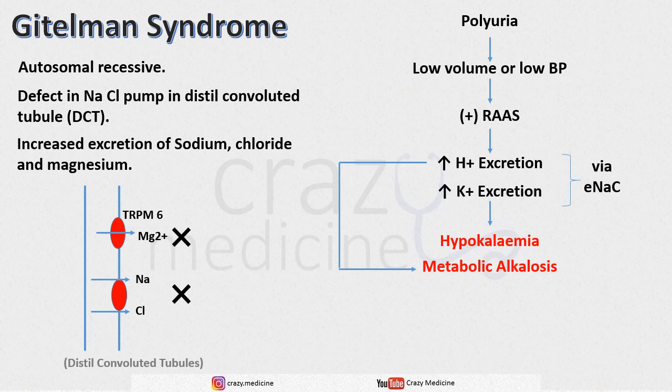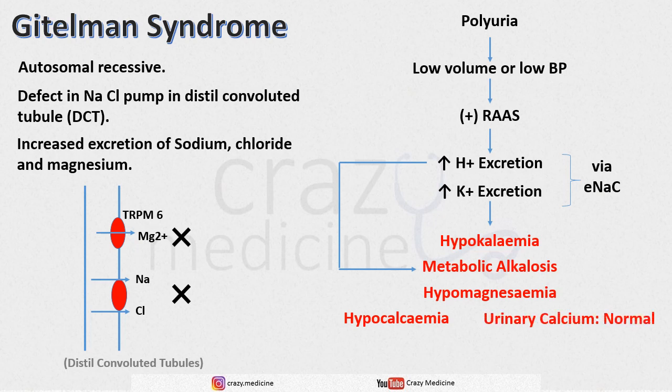Magnesium is required for release of parathyroid hormone from chief cells of the parathyroid gland. As magnesium is low, this function is affected, resulting in hypocalcemia, but urinary calcium is normal. Treatment includes mainly supportive management like salt and fluid supplementation.